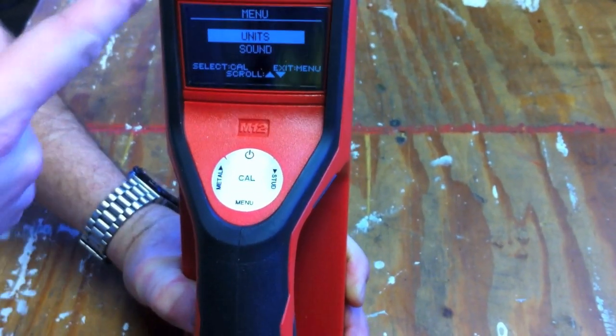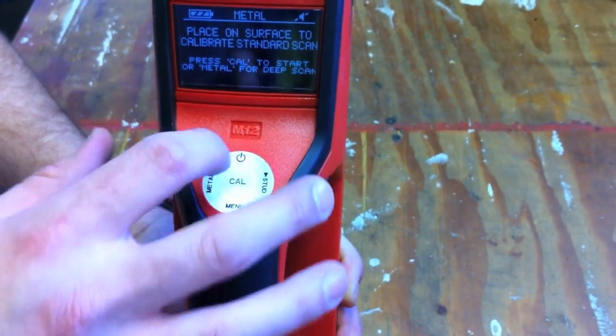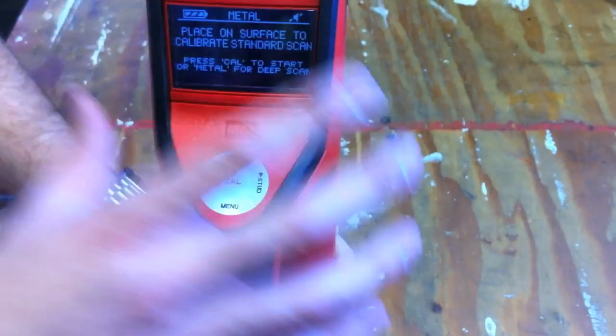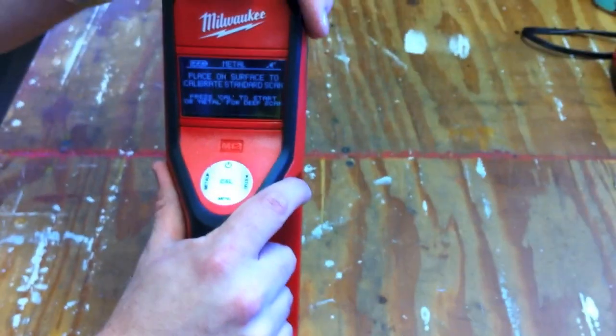If you hit menu, you can go through units, sound. So you can go through units and sound, change some user settings on there. Like I said, this thing is really light. It's a really good scanner, and we're going to go ahead and show this to you in action.